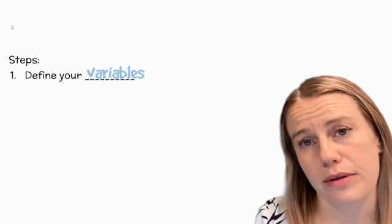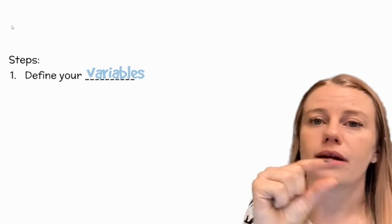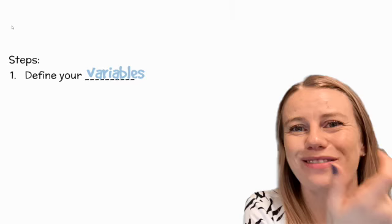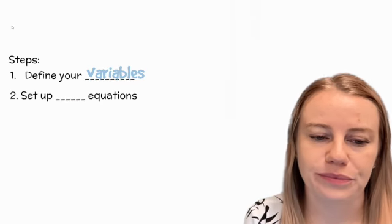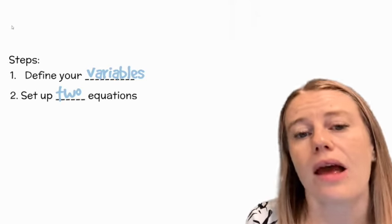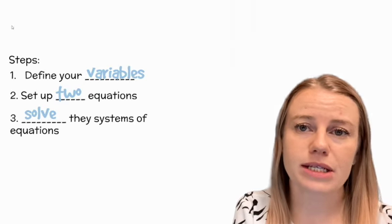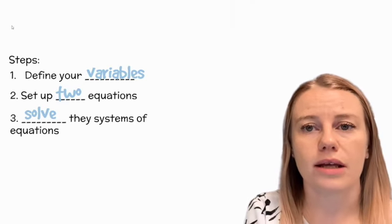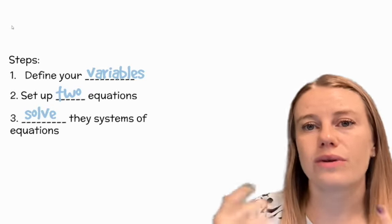For these word problems, our steps are: one, define your variables—I want to see that you have put this letter, whatever you choose, equals this, whatever we're trying to solve for. Then we're going to set up our two equations, and then we're going to solve them.